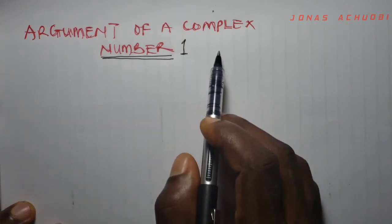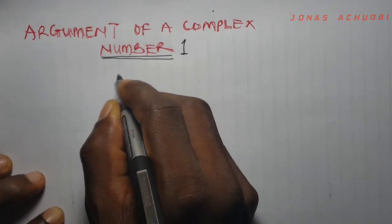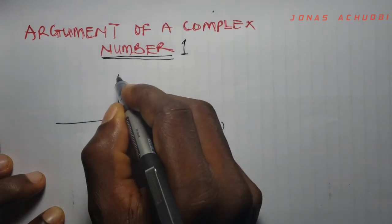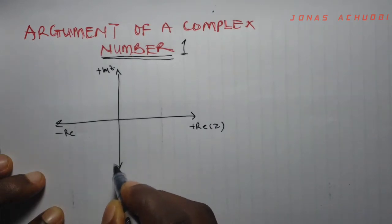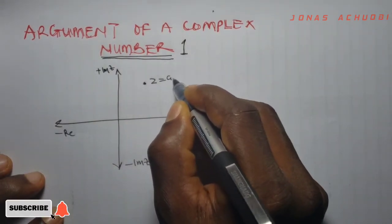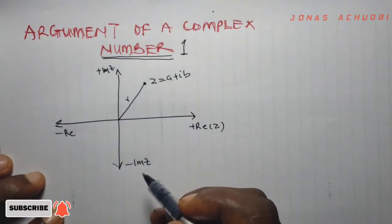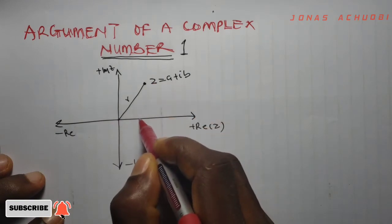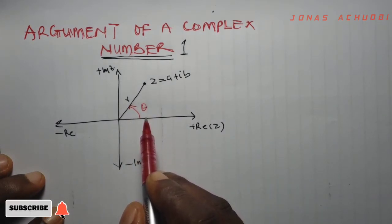The argument of a complex number is defined as the angle which a complex number makes with the positive real axis. Now if we draw our complex plane, this is the positive real axis, this is the positive imaginary axis, this is the negative real axis, and this is the negative imaginary axis. So if we have a complex number z equal to a plus ib, where r is the magnitude or modulus of z, then the argument is simply the angle theta that this complex number makes with the positive real axis.